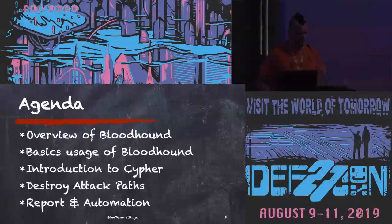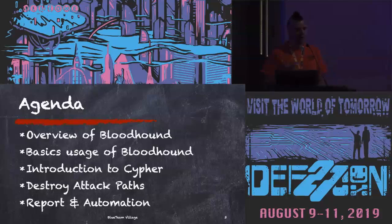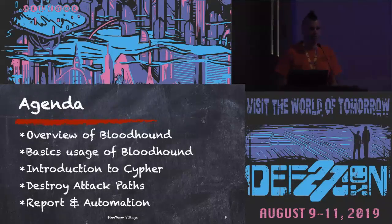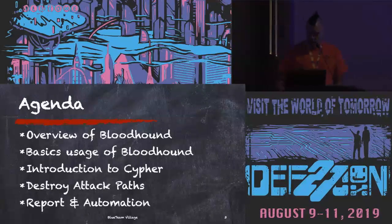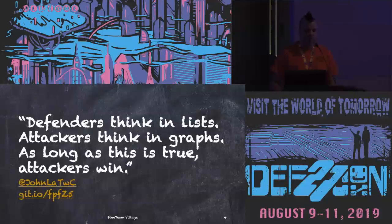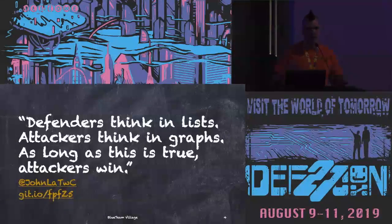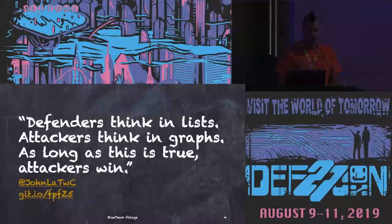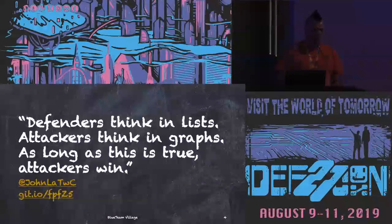Here's the agenda for today: we're going to talk about what Bloodhound is, the basic usage of Bloodhound, an introduction to the Cypher language, then we're going to set to destroy paths, and then I'll talk about reporting and automation. By show of hands, who here has used Bloodhound before? And who has built their own Cypher queries? Defenders think in lists, attackers think in graphs — as long as this is true, the attacker wins. It's a common saying from John Lambert.